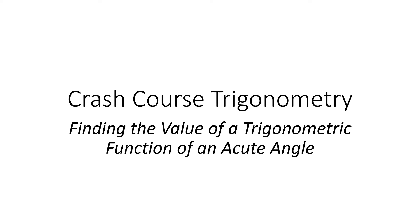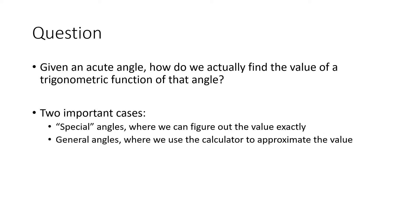In this next video in our Crash Course Trigonometry series, we're going to talk about how to find the value of a trigonometric function of an acute angle. So far, all of the things we've said about trigonometric functions have been in the abstract — drawing an abstract triangle and talking about opposites, adjacents, and hypotenuses. Now we're actually going to find the value of a trigonometric function of a specific angle. We've got two important cases: special angles, where we can figure out the value exactly using geometry, and general angles, where we use a calculator to find an approximate value.